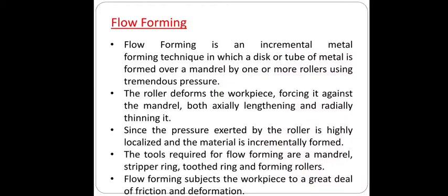The next process is flow forming. Flow forming is an incremental metal forming technique in which a disc or tube of metal is formed over a mandrel by one or more rollers using tremendous pressure. The roller defines the workpiece, forcing it against the mandrel, both axially lengthening and radially thinning it. The tools required for flow forming are a mandrel, stripping ring, tooth ring, and forming rollers.